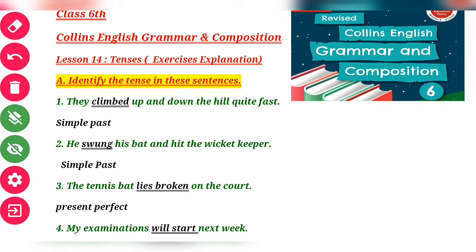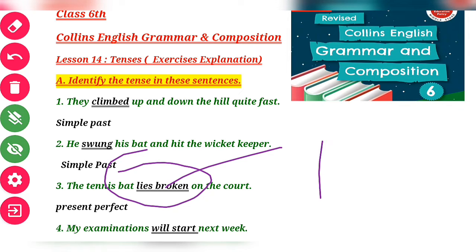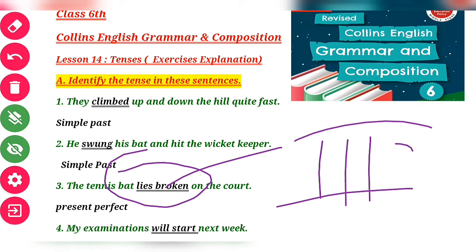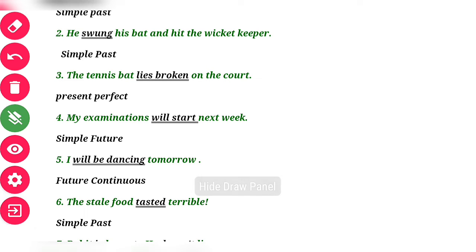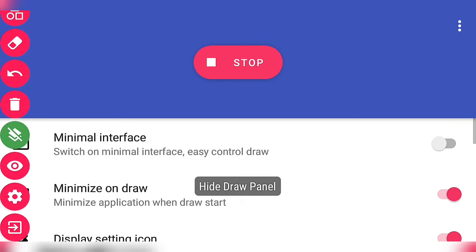Question 3: 'The tennis bat lies broken on the coach.' 'Lies' is a verb here, and 'broken' is the third form of the word, which is why Present Perfect has been used.